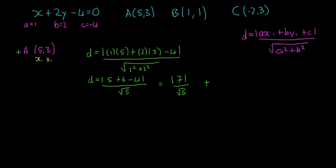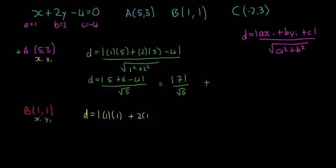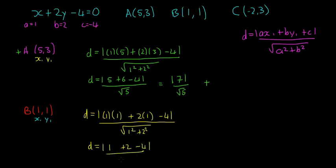Now we do the same for point B, which is (1, 1). D equals 1 times 1, plus 2 times 1, minus 4, all divided by the square root of 1 squared plus 2 squared. That gives us 1 plus 2 minus 4, divided by root 5, which equals minus 1 divided by root 5. This is a minus result, meaning A and B are on opposite sides of the line.